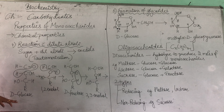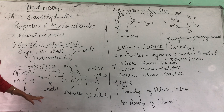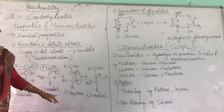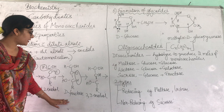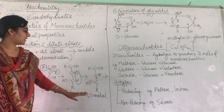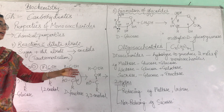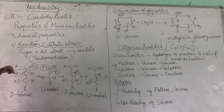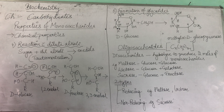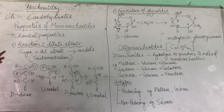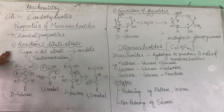For example, D-glucose forms 1,2-enediols, and D-fructose forms 2,3-enediols — just by migration of a hydrogen atom. And this reaction occurs in this mixture. So this is the reaction with dilute alkali.